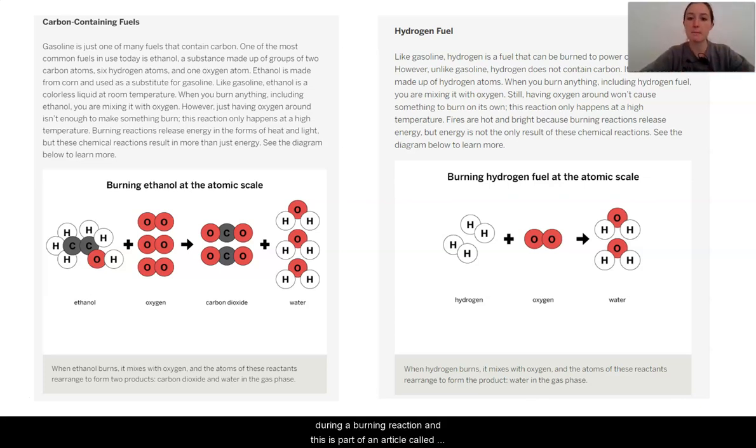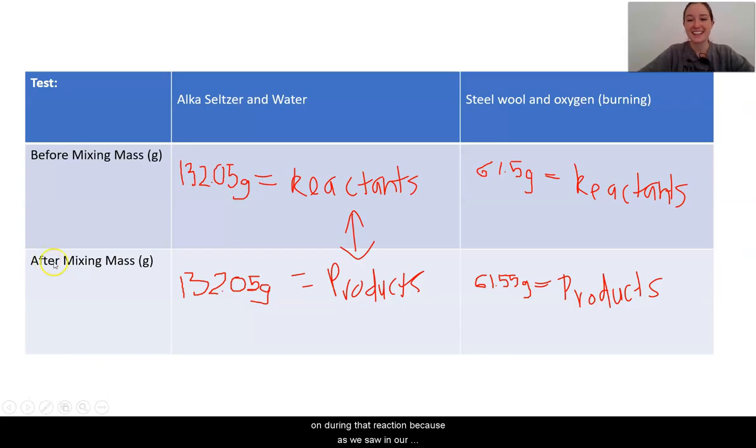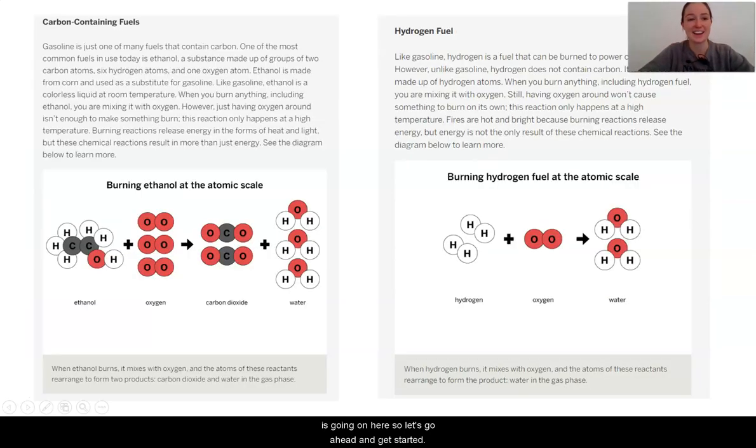And this is part of an article called What Happens When Fuel Burns. We are going to read the rest tomorrow. But today, we're going to look specifically at understanding what is going on during that reaction. Because as we saw in our results, the steel wool and oxygen actually increased when there was that reaction. So were atoms created? What is going on here? So let's go ahead and get started.